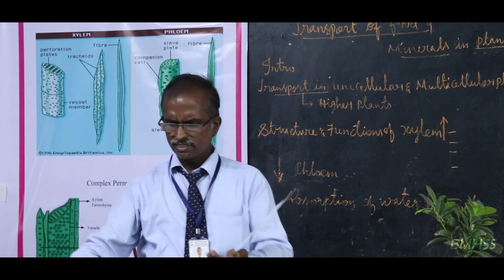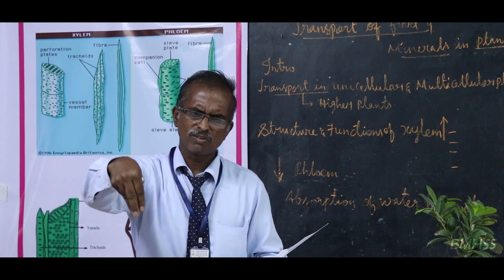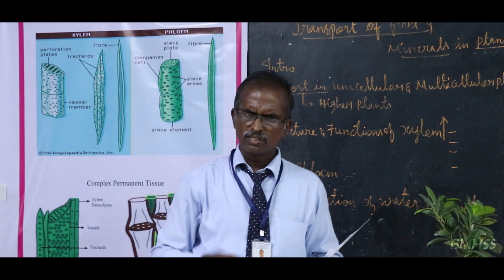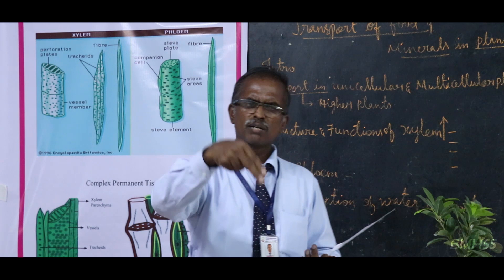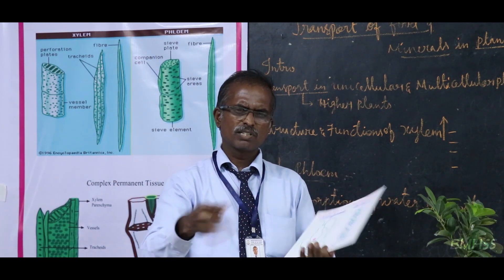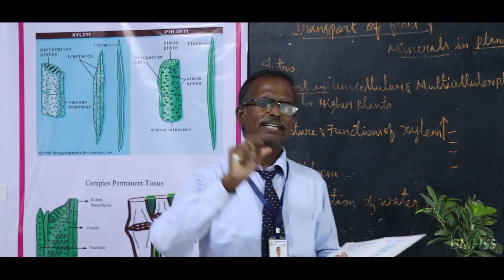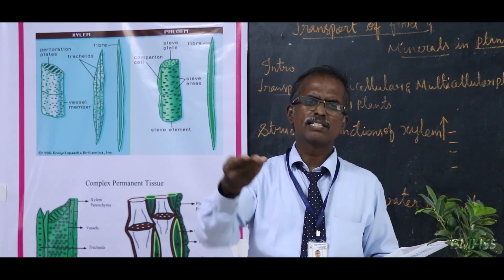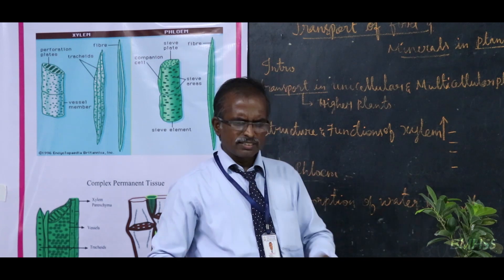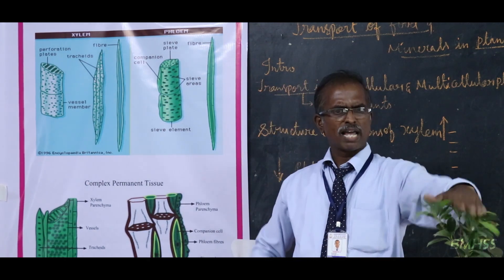Best examples: take a bucket of water and pour little drops of liquid blue dye - that is an example of diffusion. Take a cup of milk, add a teaspoon of sugar - after some time without stirring, when you drink the milk you get a sweet taste. That is also an example of diffusion. However, diffusion is not applicable in the case of higher plants.